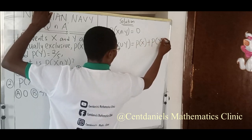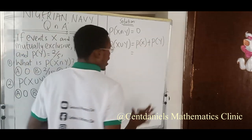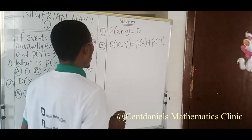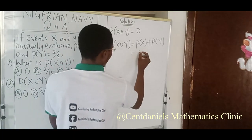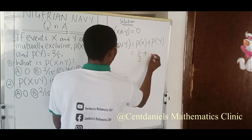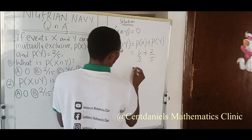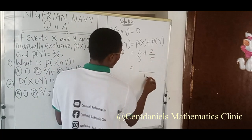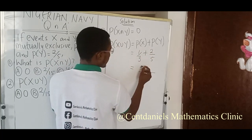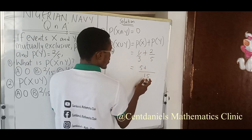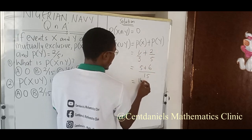So we'll find P of X, P of Y, and then we sum the two probabilities. The probability of X given in the question is one over three plus probability of Y, which is two over five. We add these two fractions. LCM is 15. Three into 15 is 5, 5 times 1 is 5. Five into 15 is 3, 3 times 2 is 6. We end up with 11 over 15.